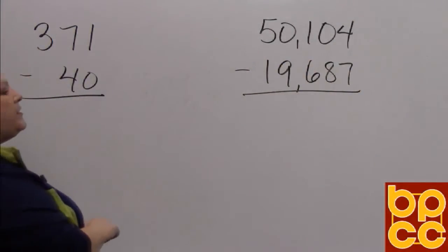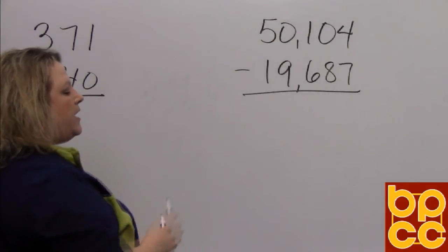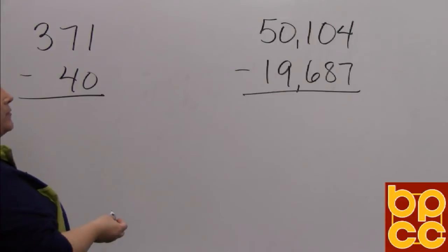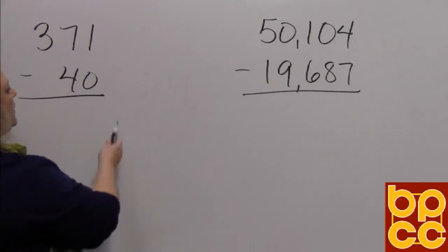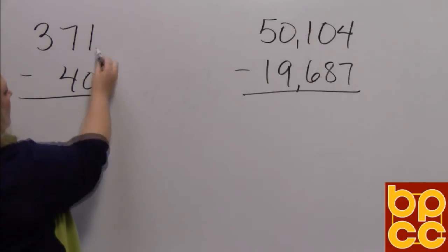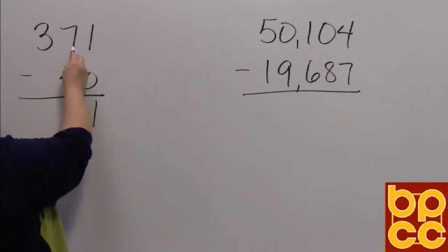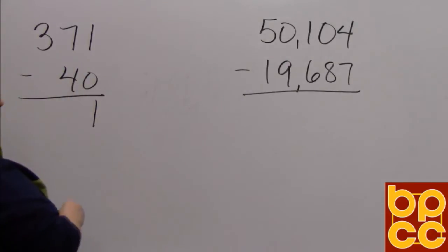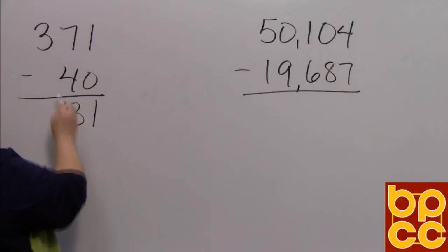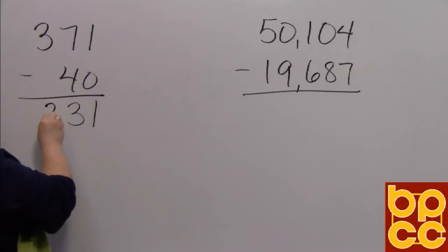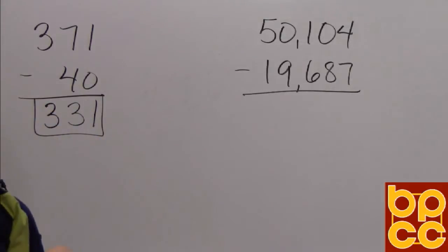The first problem that we're going to do is 371 and we're going to take away 40. So when you do subtraction, you always want to start from the right to the left and you start in the ones column. One take away 0 gives me 1. Seven, I'm taking away 4 and that leaves me 3. I have 3 in the hundreds place. I'm not taking anything away. So I still have 300. So the answer that I believe is correct is 331.